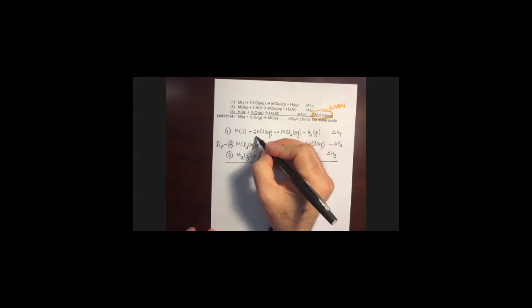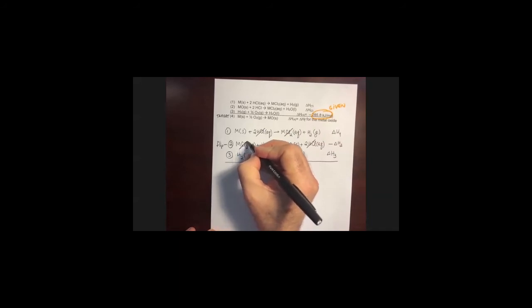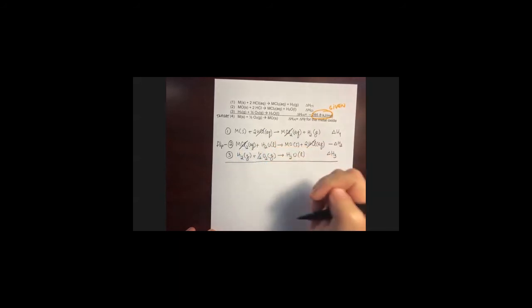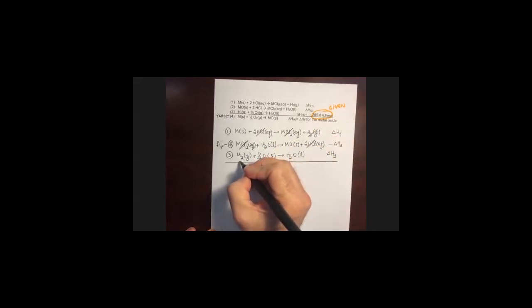We'll incorporate that value when we do our calculations. When we add up these three equations — just like in regular algebra — anything on both sides of the equation can cancel out. The two units of HCl cancel out; the metal chloride solution cancels with the metal chloride on the reactants side of the flipped equation two; the hydrogen gas product of equation one cancels with the hydrogen gas reactant of equation three.